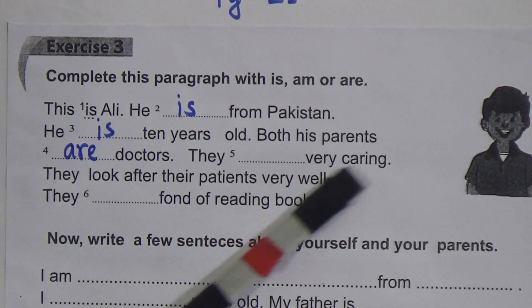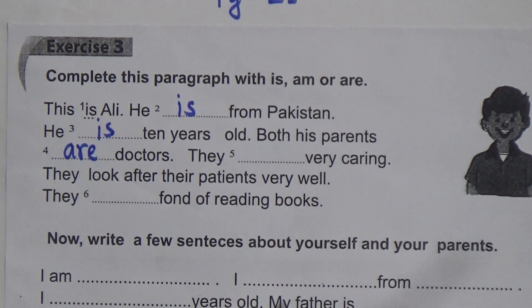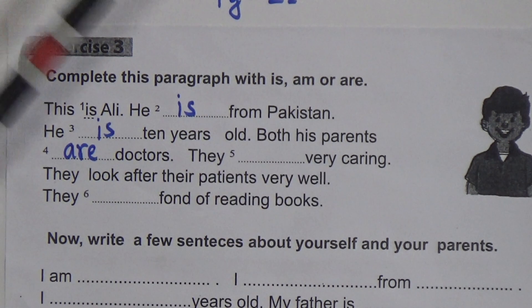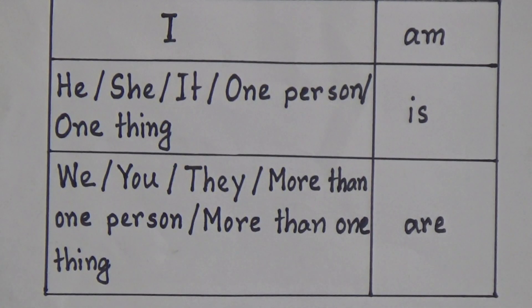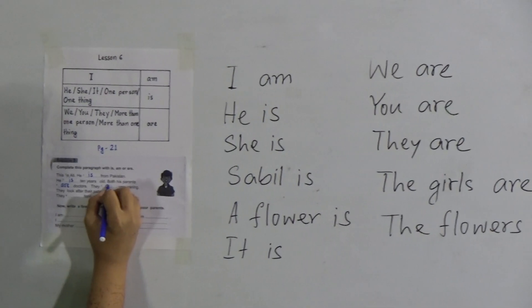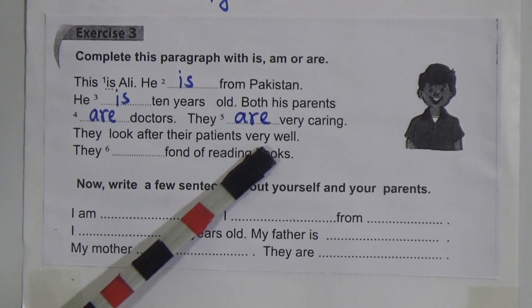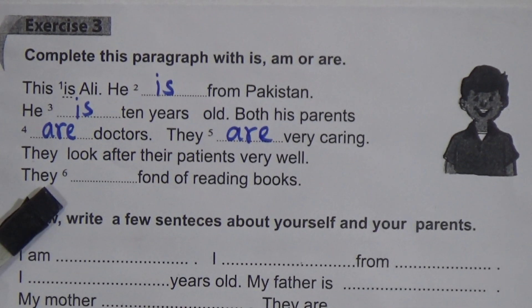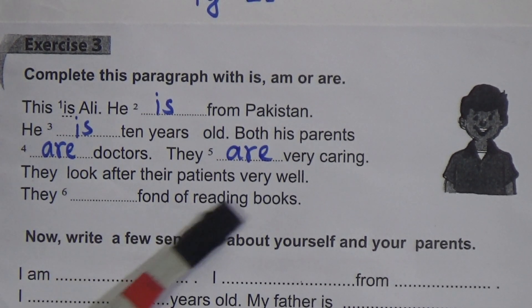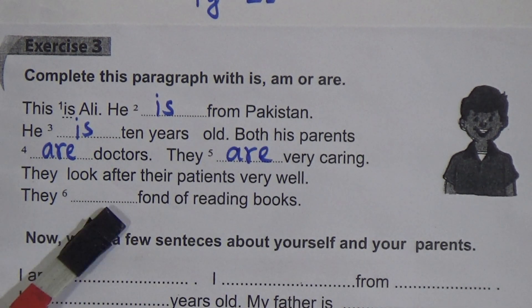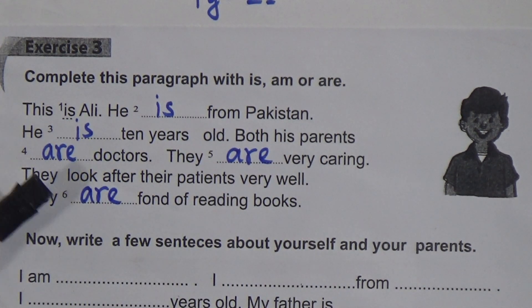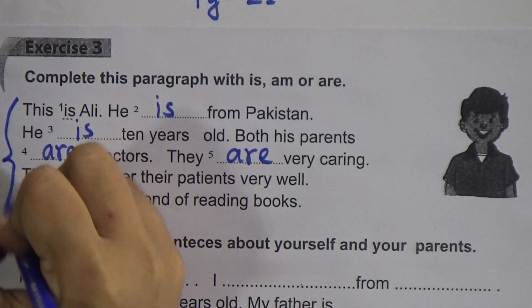Number five: 'They ___ very caring' — 'they' is given, and from the chart we use 'are' after 'they', so: They are very caring. They look after their patients very well. Number six: 'They ___ fond of reading books' — just like number five, after 'they' we write 'are': They are fond of reading books. This is the first part of Exercise 3, and this part is your homework — Homework Number 3.